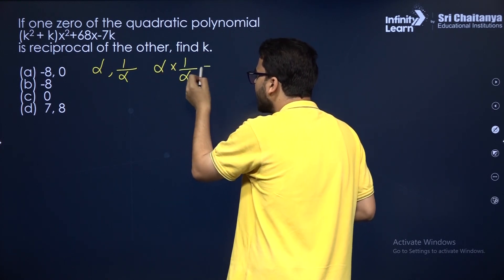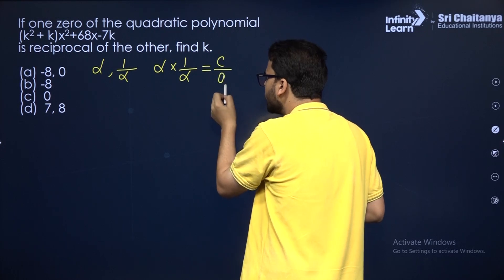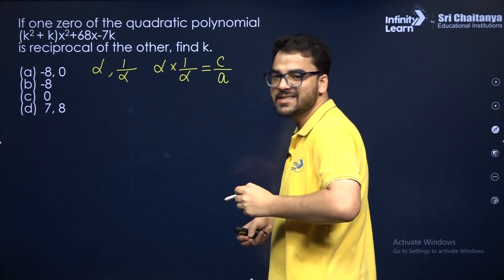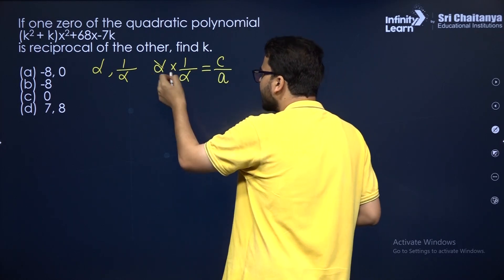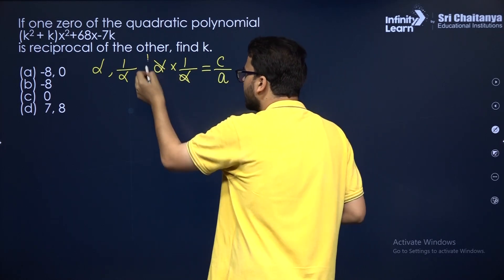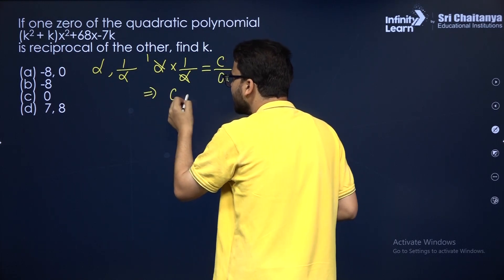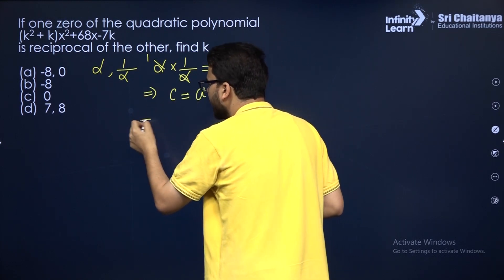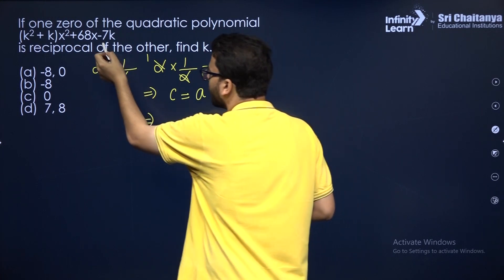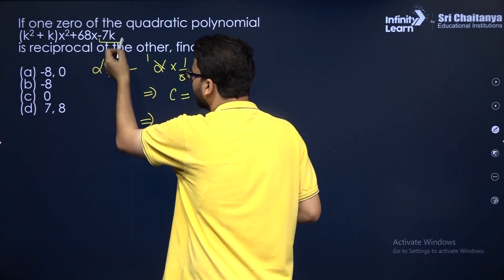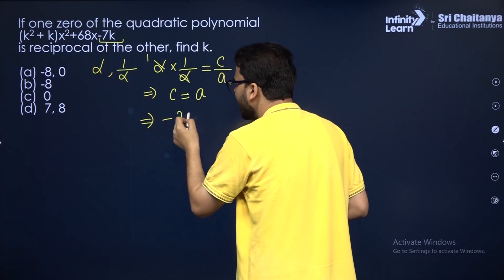For a quadratic polynomial, the product of zeros equals c/a. Here, alpha × (1/alpha) = 1, and that equals c/a. Cross-multiplying gives c = a. Now c is the constant term, which is −7k.